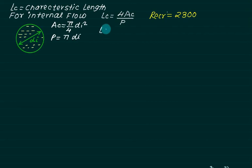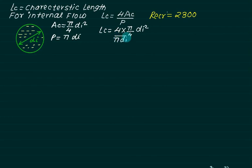Substituting into the definition of LC, we get four times (pi/4 times di squared) divided by pi times di. The 4s cancel, the pi cancels, and the characteristic length in this case is simply di, the internal diameter of the pipe.